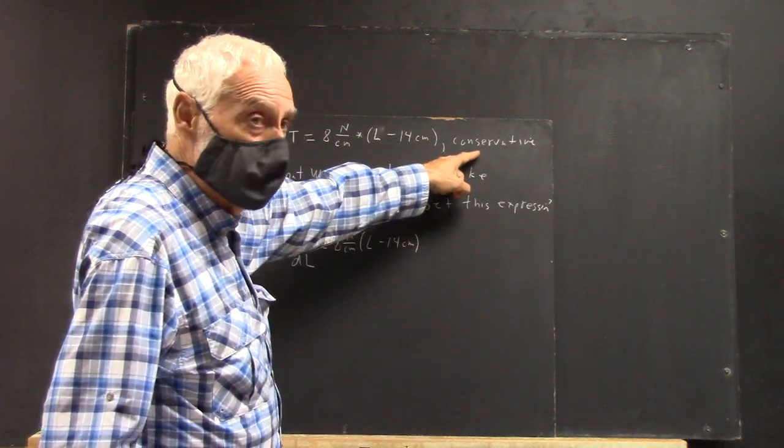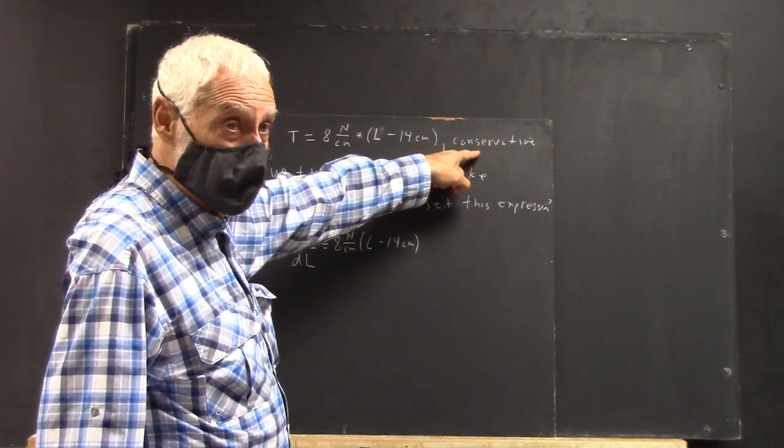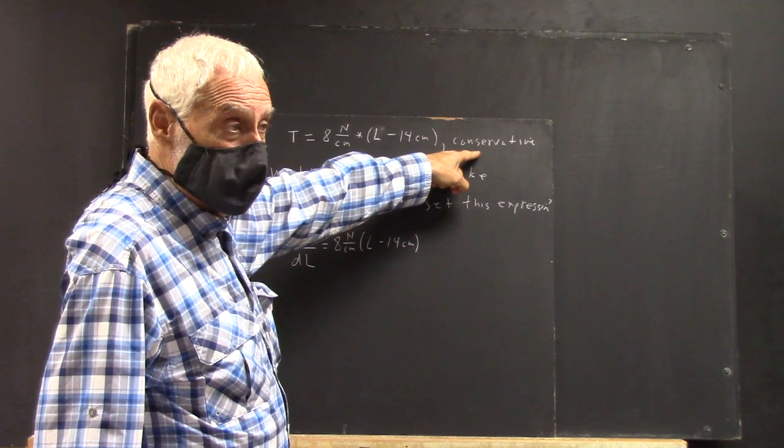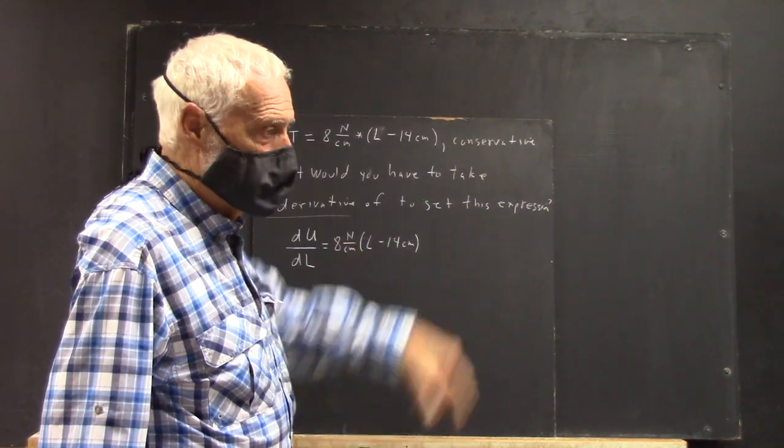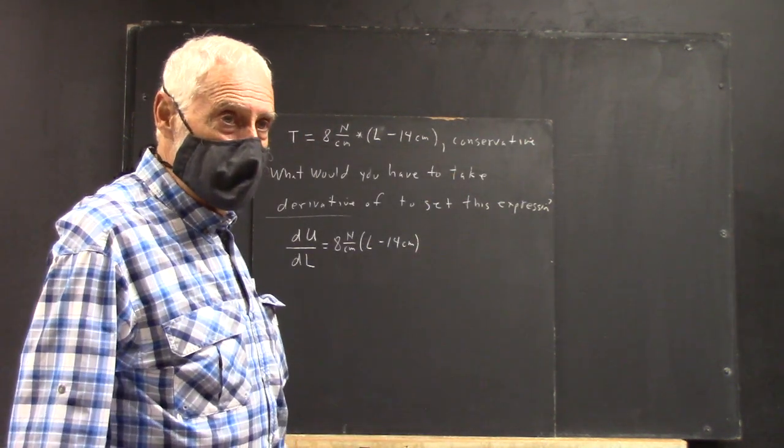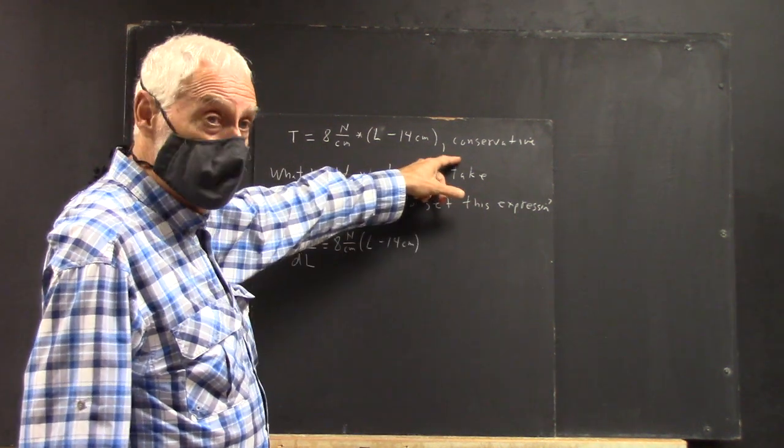We're assuming it's a conservative force. Now, the rubber band really isn't conservative, pretty far from conservative, but still can kind of be approximated that way. A good spring is much closer to being conservative.